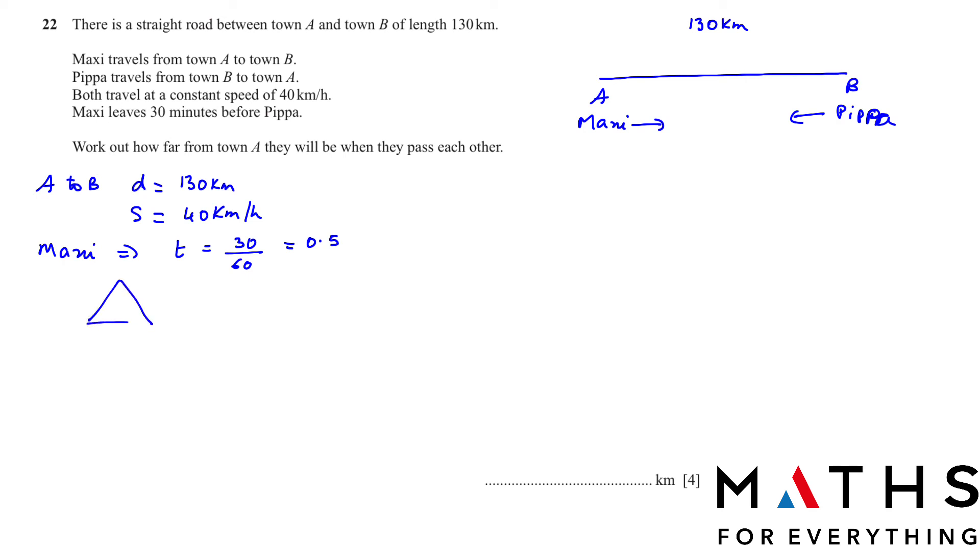So to find the distance covered in the 30 minutes or half hour, we multiply 40 by 0.5. So the distance Maxi covers is 20 kilometers. This is, suppose, 20 kilometers that Maxi has covered. Now how much distance is remaining? There was 130, so from 130 when you minus 20, you are going to be left with 110.